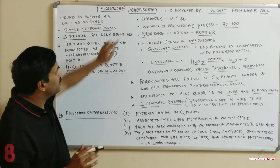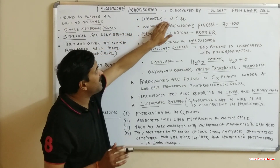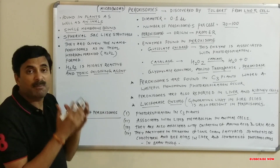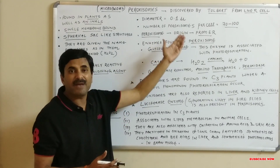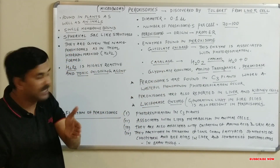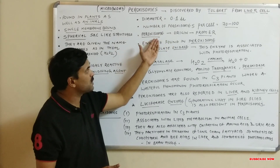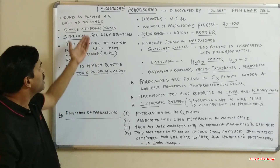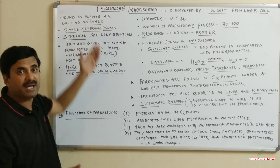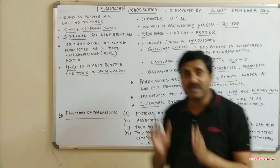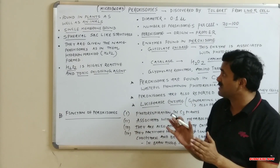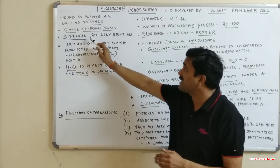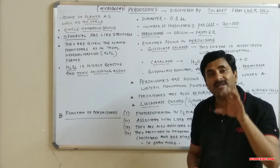Peroxisomes are very small microbodies with a diameter of 0.1 micron. The number of peroxisomes per cell varies between 70 to 100. Regarding the origin of peroxisomes, these are originated from the ER — the endoplasmic reticulum. Peroxisomes are bounded by a single membrane, so we can say they are single membrane-bound structures. They are spherical, meaning round and sac-like in shape.